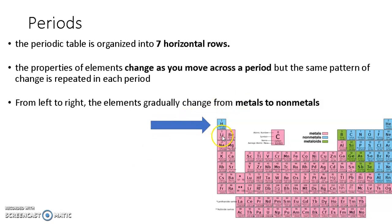So periods are your horizontal rows right here. This is the first period, second, third, fourth, fifth, sixth, and the seventh period.